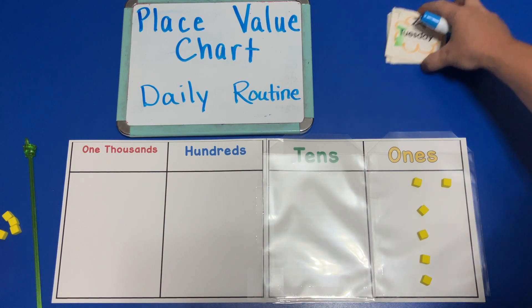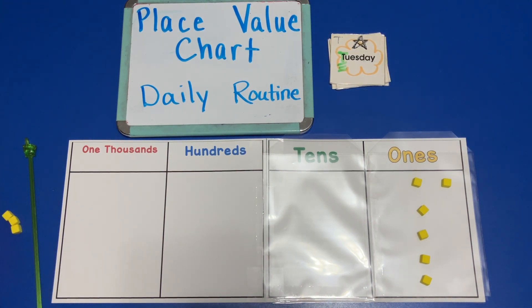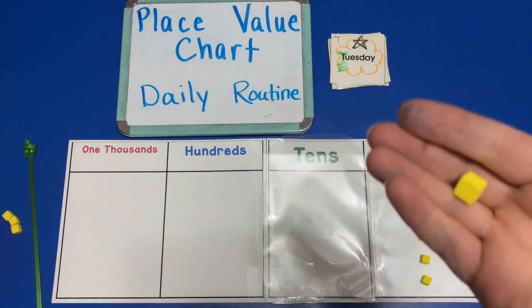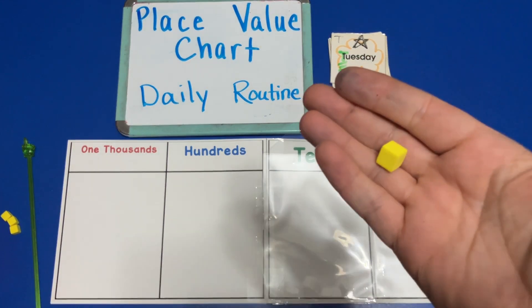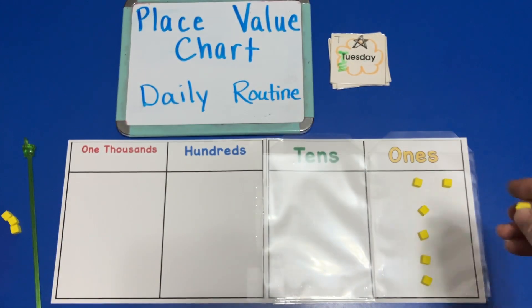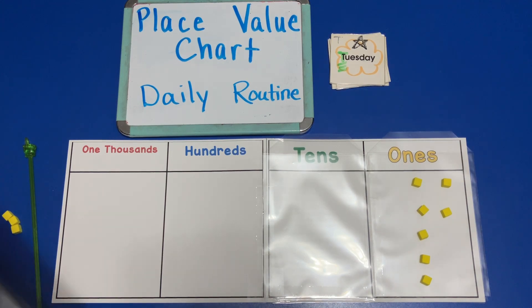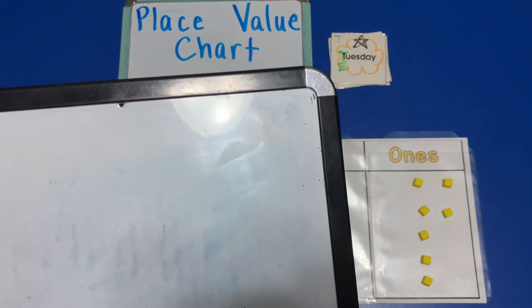And now it's Tuesday. On Tuesday we would add one unit to our place value chart, and we would say: what is the value of the base-10 blocks that are on our place value chart on Tuesday?